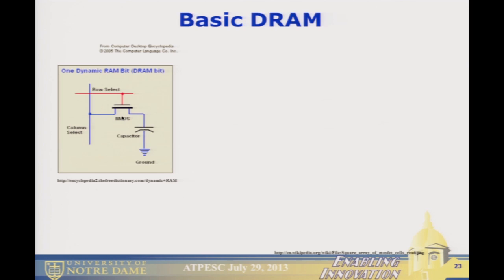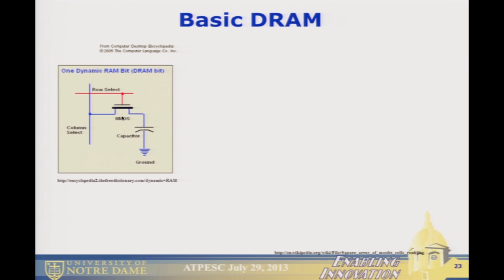Now I'm going to do the electrical engineering thing and talk about memory. A basic DRAM cell consists of a capacitor and a transistor. The capacitor stores charge. To write a bit, you turn the transistor on and the voltage on the bit-line charges the capacitor to one or zero. To read it, you put no load on the line, turn the transistor on, and part of the charge transfers to the line — you detect the voltage change and determine whether it's a one or zero.